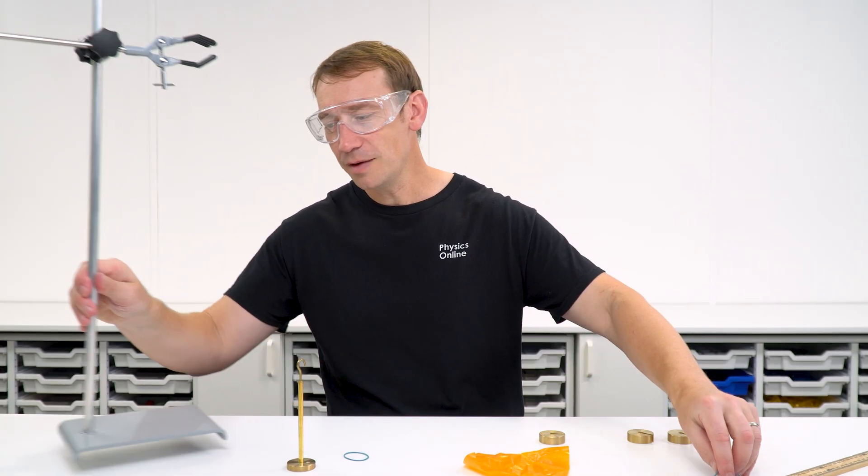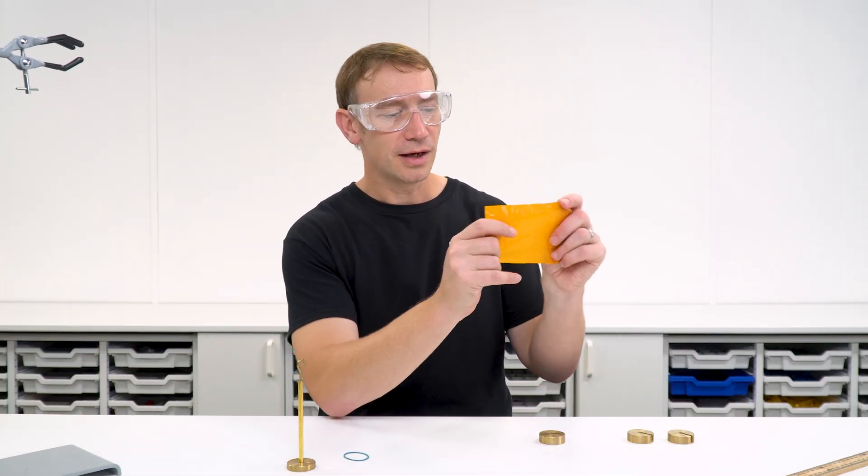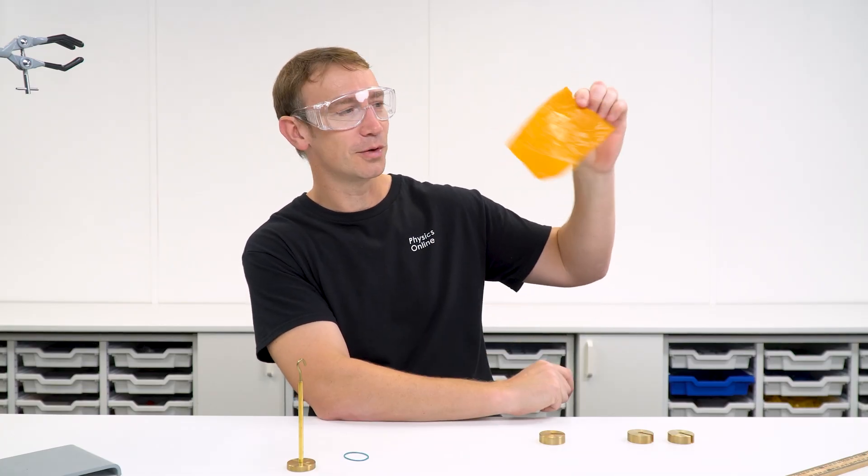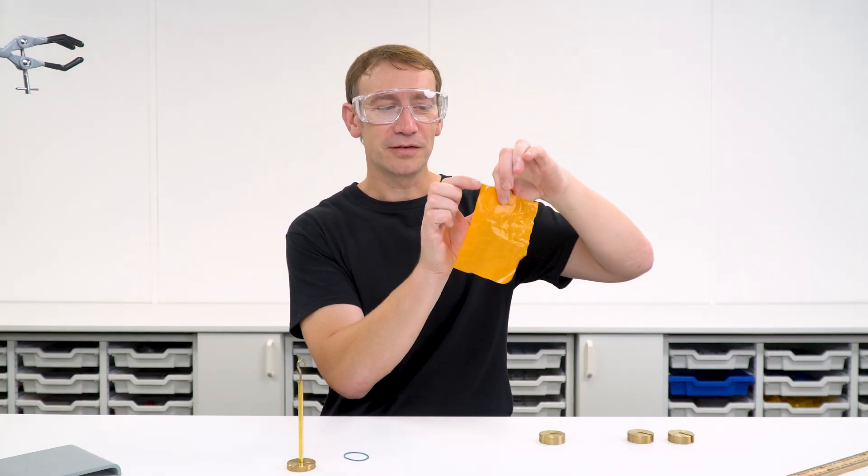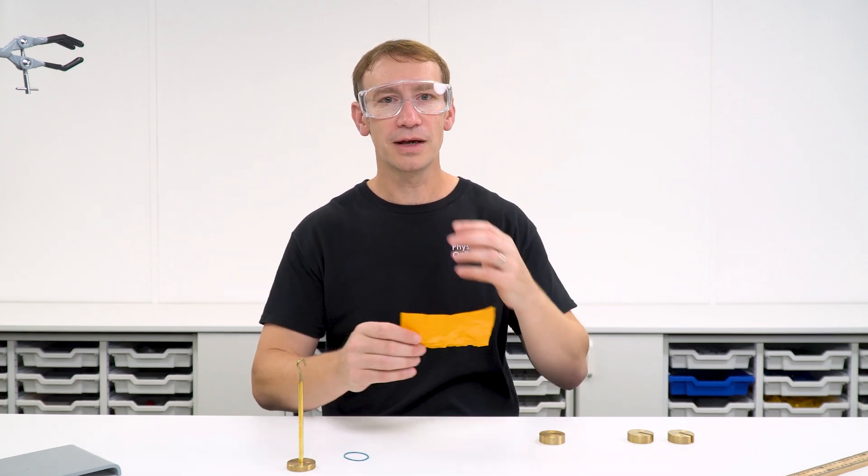We can of course do the same thing if we're investigating a polymer. So this one here is just a piece of plastic, a segment of a shopping bag and I'm sure you can work out where I've been shopping to get this. And all you need to do is cut out a strip and then we're going to be loading that strip to look at how it behaves.